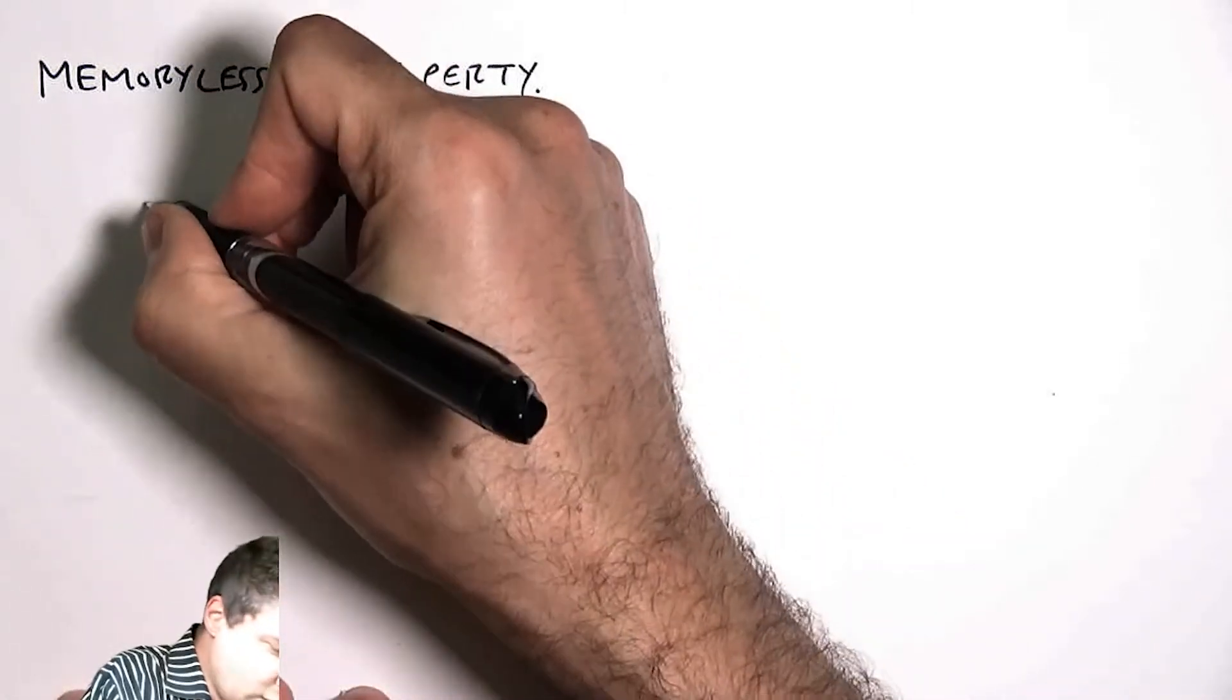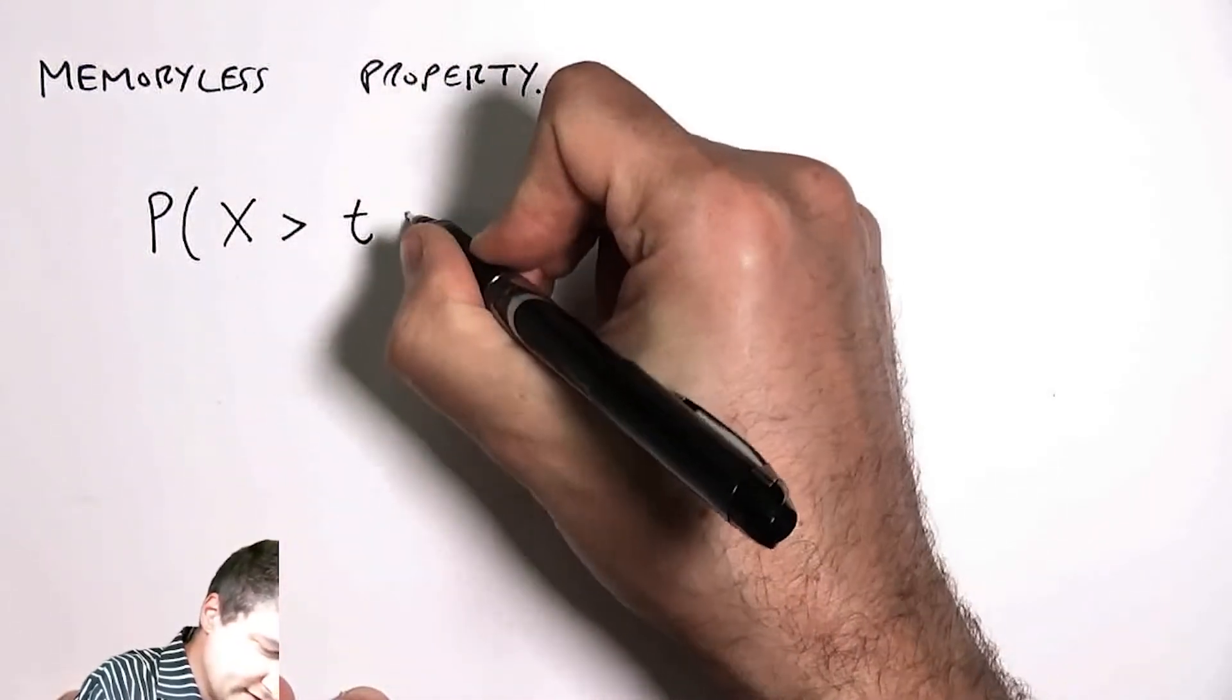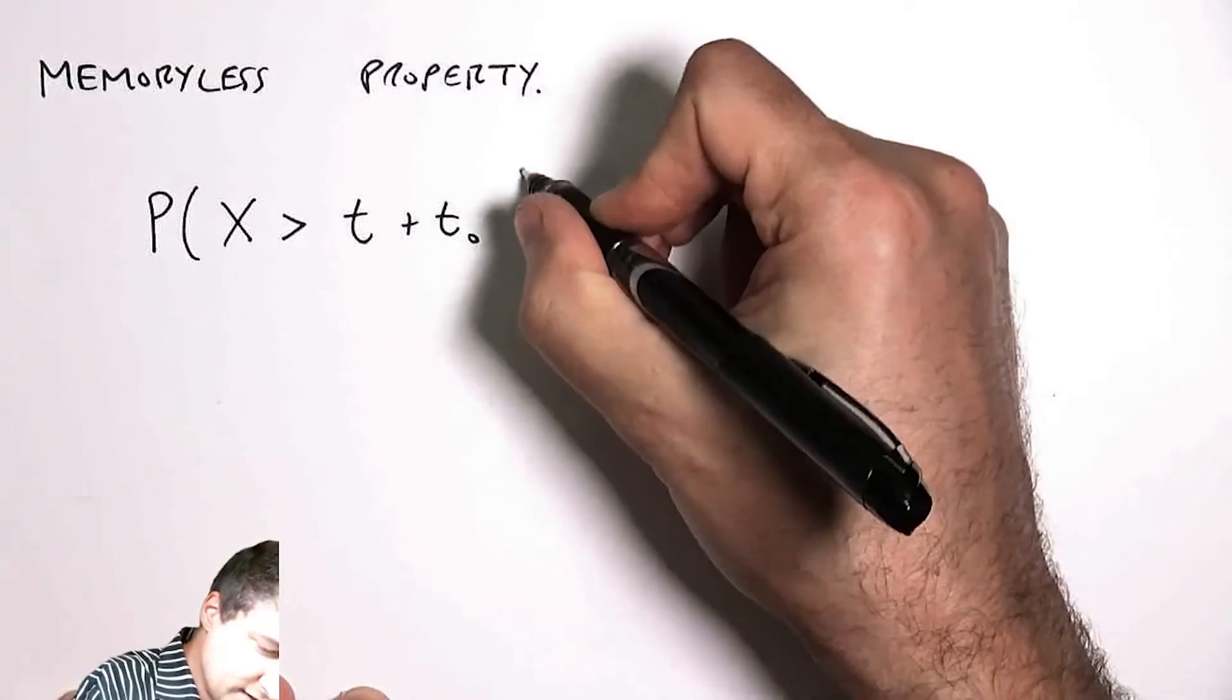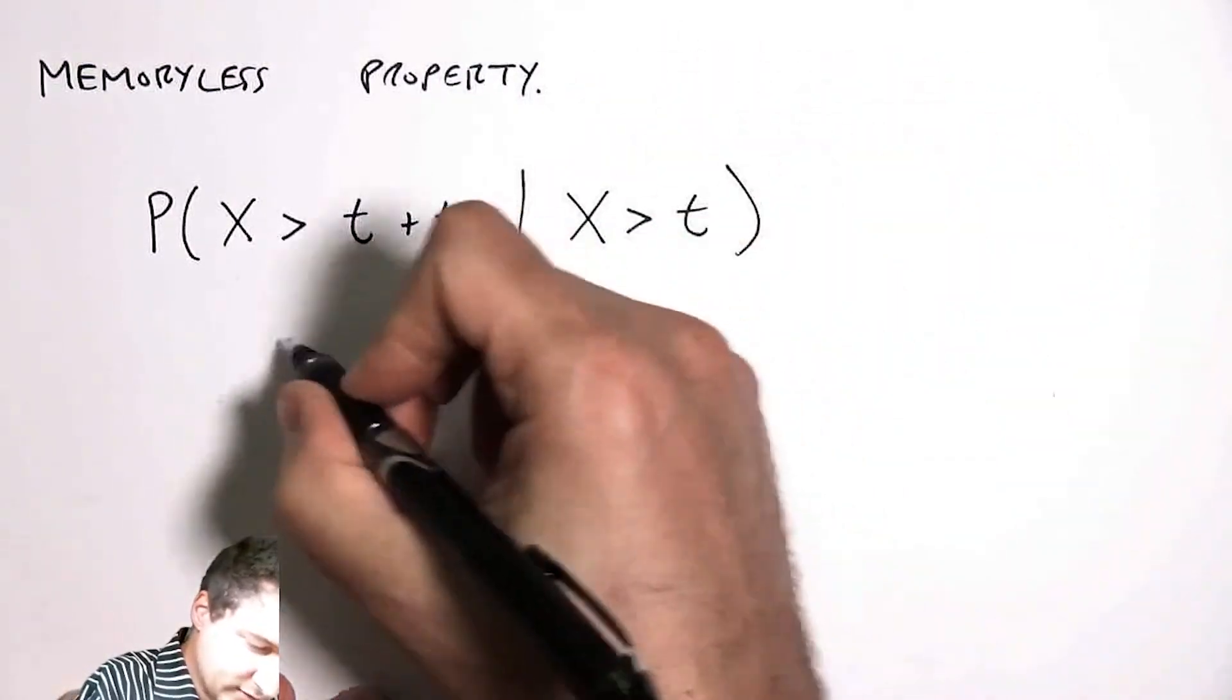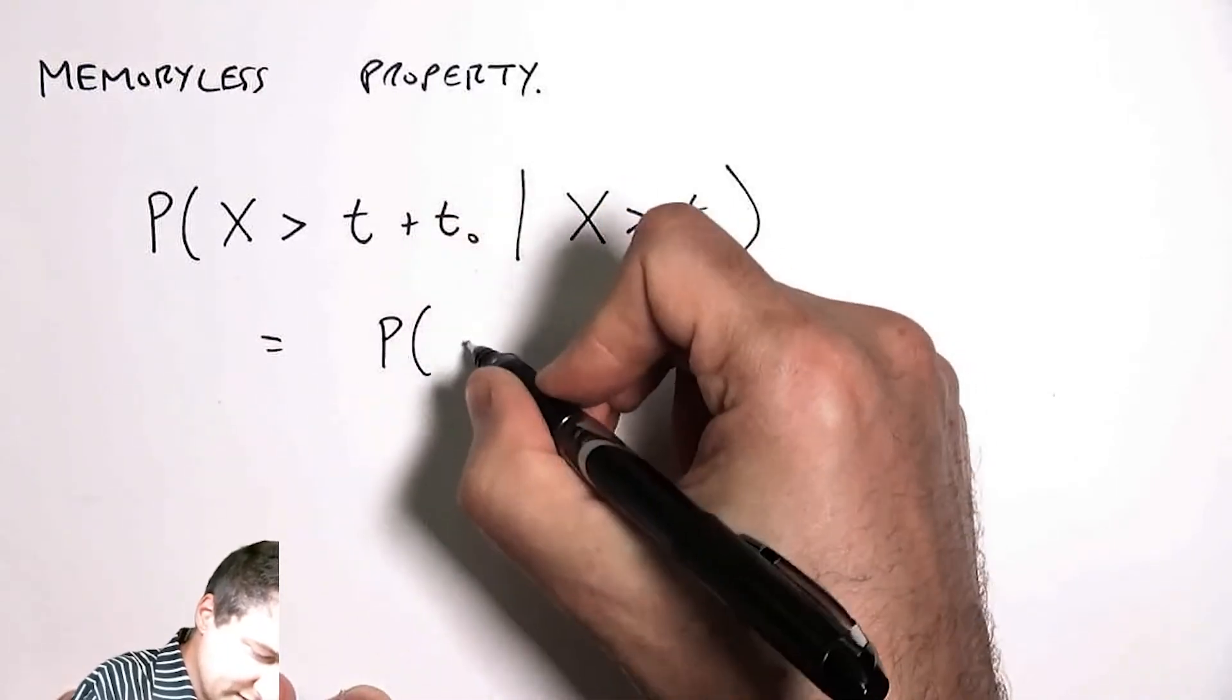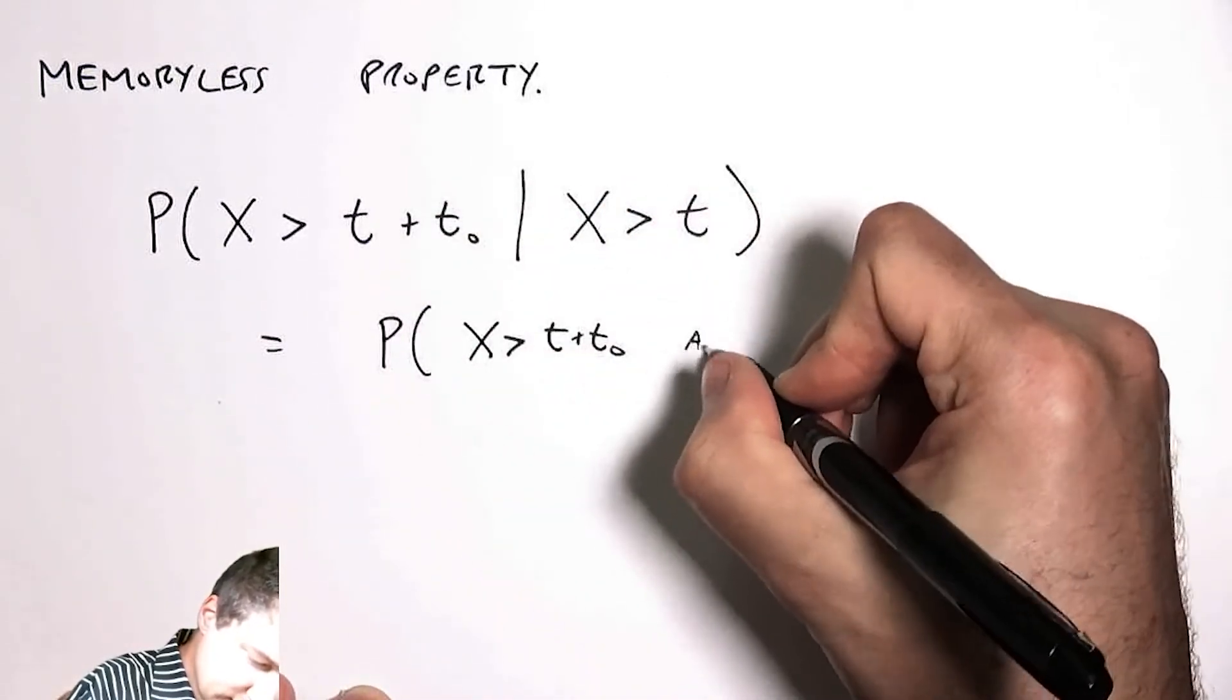What is the probability that the random variable is greater than t plus t_0 given that it's greater than t? This is a conditional probability that we can compute.